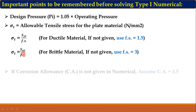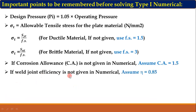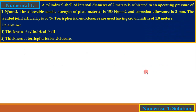The third important point is corrosion allowance (CA). It must be considered when calculating the thickness of cylindrical shells, spherical shells, or enclosures. If CA is not given, assume CA = 1.5 mm. Fourth, weld joint efficiency eta is important because these vessels are manufactured by welding. If eta is not given, assume eta = 0.85.